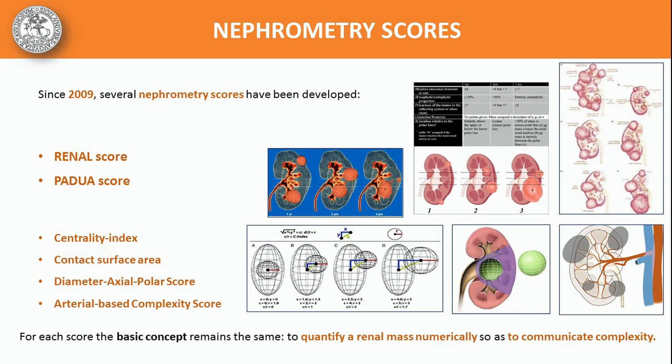Over the past decade, in order to assess the anatomical complexity of a renal mass, several nephrometry classifications have been developed, considering the occurrence of postoperative complications as an evaluation parameter. Nevertheless, being the evaluation based on bi-dimensional images, a complete understanding of the morphological and anatomical characteristics of the tumors can remain potentially suboptimal.